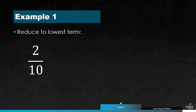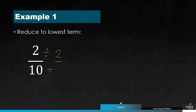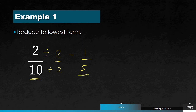A fraction is in lowest terms when the factors of the numerator and denominator are already prime numbers. In this case, for 2 over 10, the greatest common factor — the GCF — is 2. So we divide both 2 and 10 by 2: 2 divided by 2 gives 1, and 10 divided by 2 gives 5. Therefore, 2 over 10 is also equal to 1 fifth — and since the factors are now prime numbers, this fraction is in its simplest form.